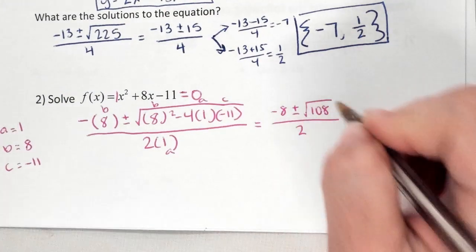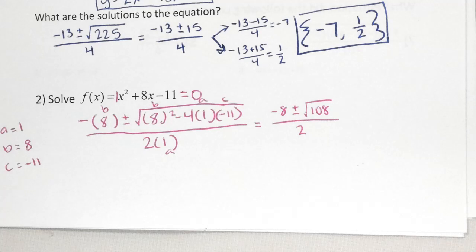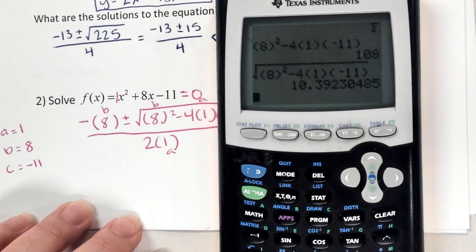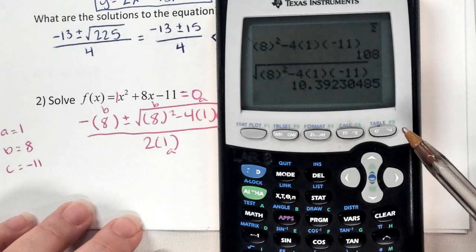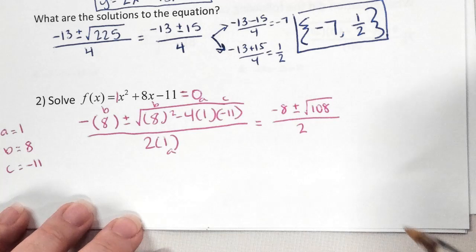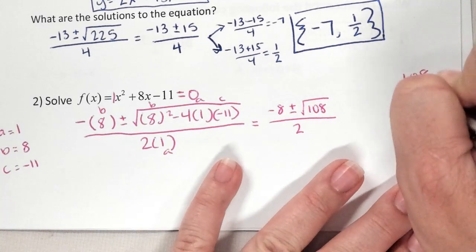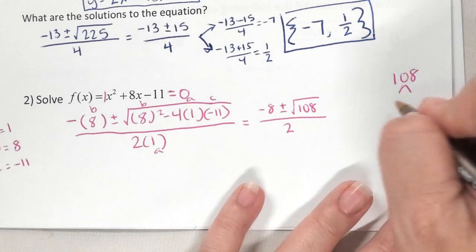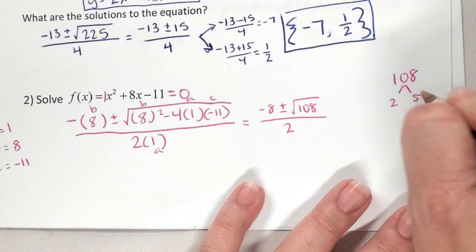The reason we don't type it inside the house (the radical) is because typing it with the house gives an ugly decimal — that's not how we simplify a radical, so you'd have to retype it anyway. That's why we simplify just the discriminant first, before adding the radical. 108 is not a perfect square, so I break it down with a factor tree. It's even, so 2 goes in: 108 ÷ 2 = 54.